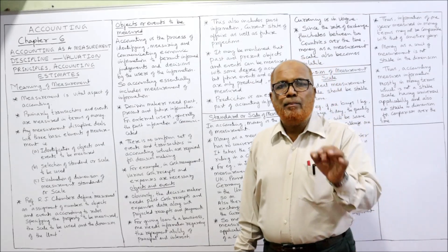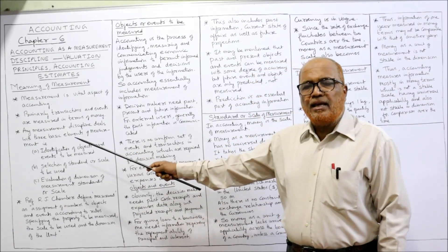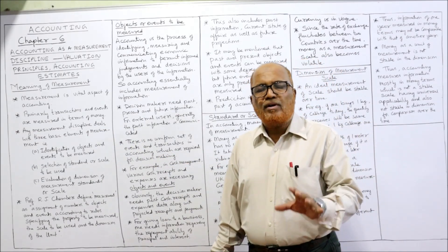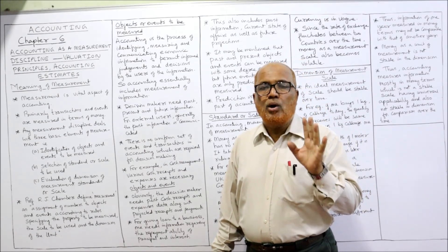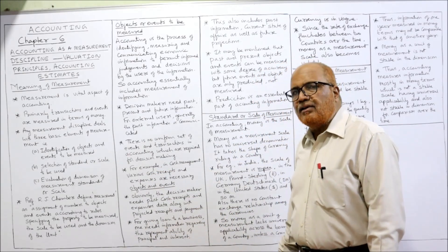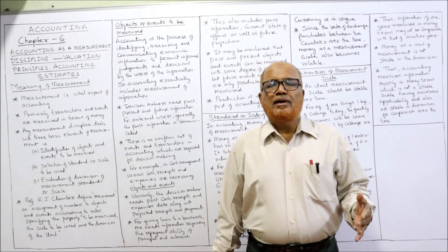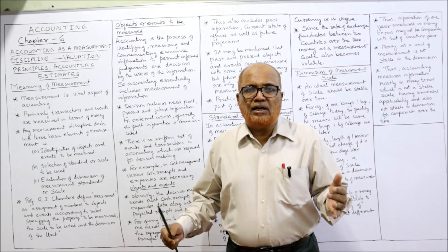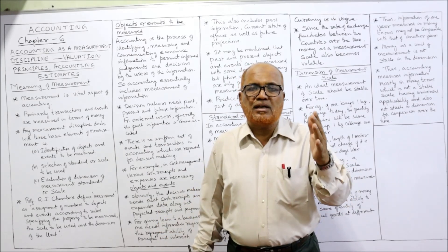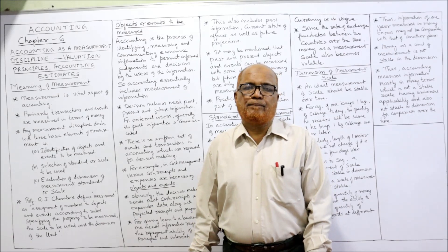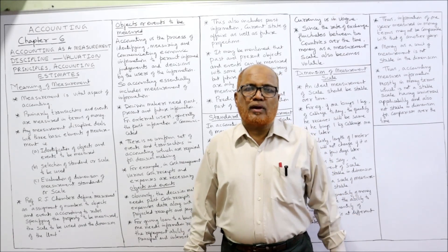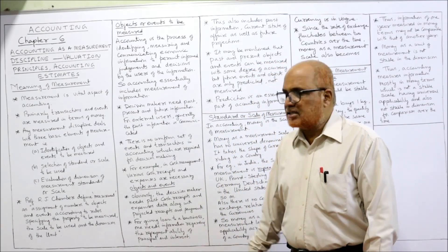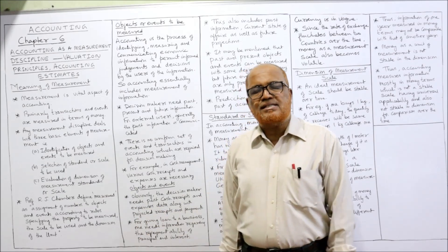Any measurement discipline deals with three basic elements of measurement. The first one is identification of objects and events to be measured. The first aspect in accounting is identifying what are the events and transactions that are required to be measured. Without identifying, how can we record? The second is selection of a standard or scale to be used.